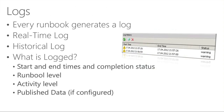Every runbook generates a log. There is a real-time log showing current running runbooks — when they started and which activities are currently running. There is also a historical log for every runbook that has run in the past, showing when it started, when it ended, and the completion status. Double-clicking a historical log entry shows all activities and their statuses, including start and end times, completion status at both runbook and activity level, and published data.